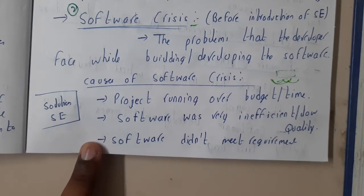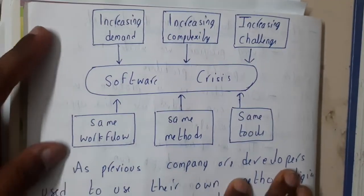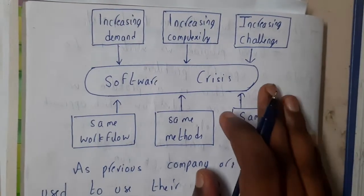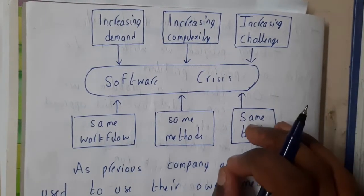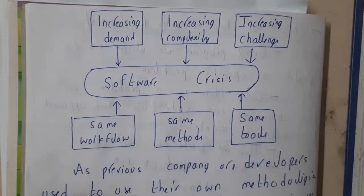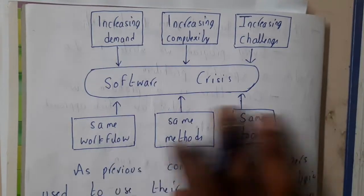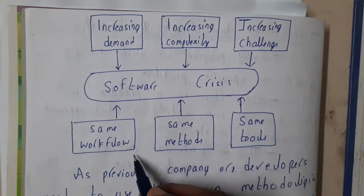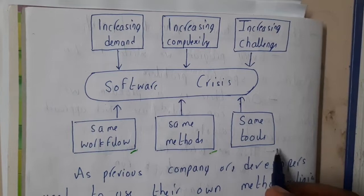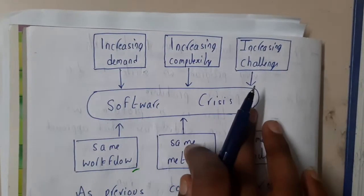Software did not meet the requirements because they did not follow requirement gathering. If you write a small crisis diagram, basically the crisis occurred because they were using the same methodologies from previous projects — the same workflow, same methods, and same tools — even as demand kept increasing, which caused the software crisis.